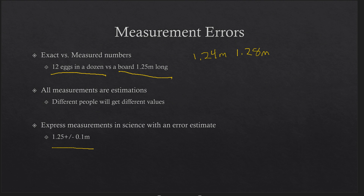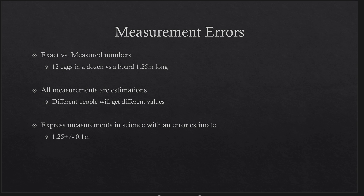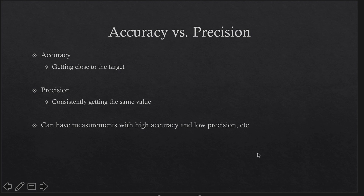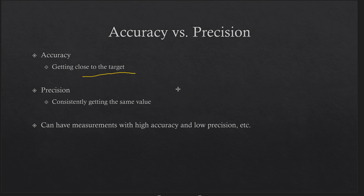Now let's look at accuracy versus precision. Accuracy means you are getting close to the target — close to the actual or accepted value. Precision means you are being consistent: you might be making the same measurement over and over and consistently getting the same value, but it's off from the correct answer.